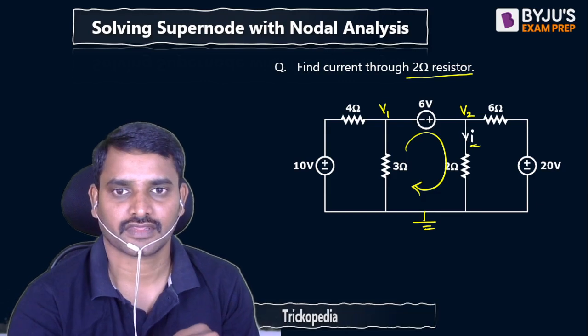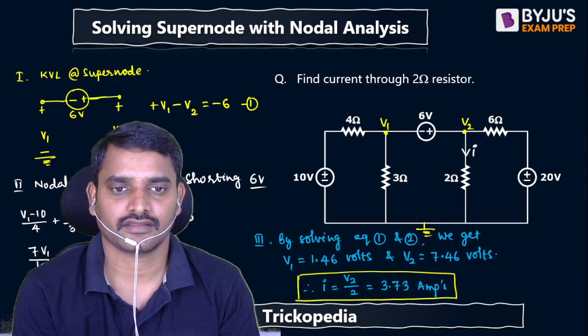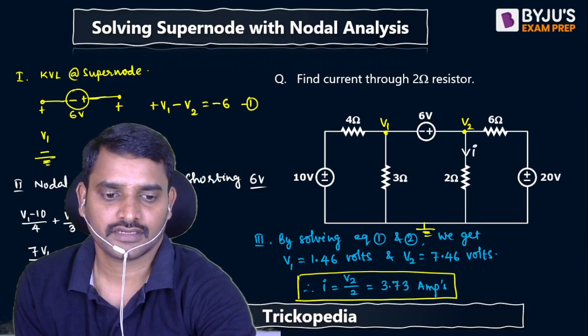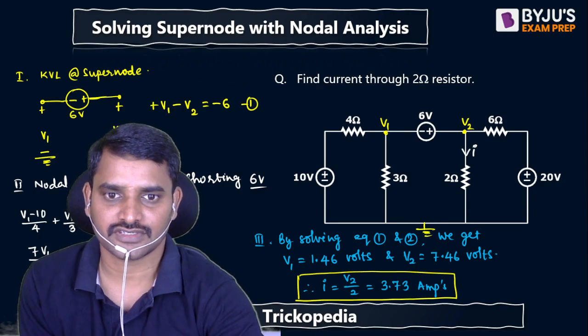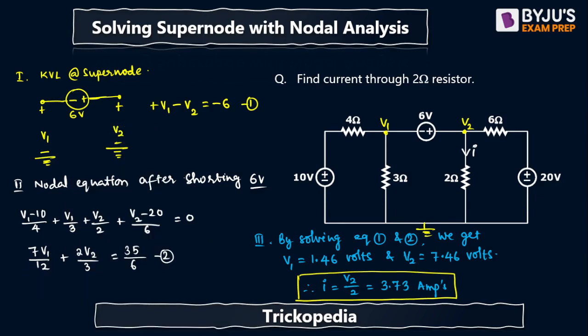Here is the procedure. First step: I went for supernode, I have got one equation. Second step: I went for nodal equation by shorting the 6 volt source, I have got one more equation. I have solved the two equations, so I have got v1 and v2.